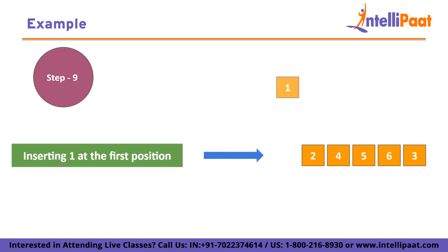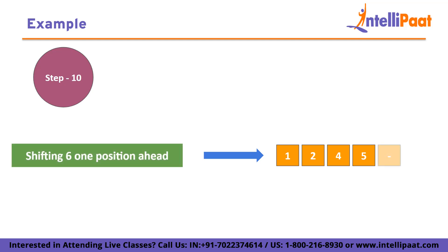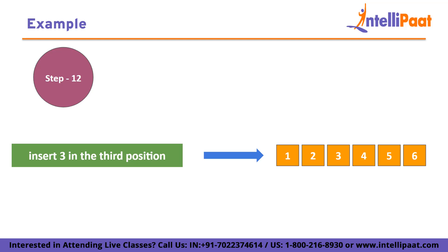Further comparing 1 with the previous element, 4, we insert 1 at the first position. Moving to the next element, 3, we compare it with the previous element, 6. Since 3 is smaller, we shift 6 one position ahead. Lastly, comparing 3 with the previous element, 4, we insert 3 at the third position. And just like that, Insertion Sort successfully organizes the array in ascending order. Its step-by-step process of comparing and inserting elements ensures a sorted result.